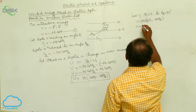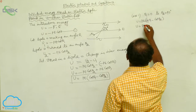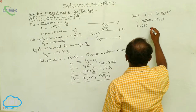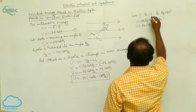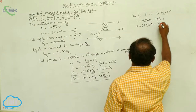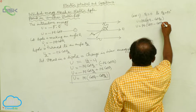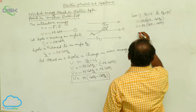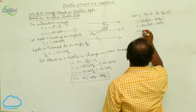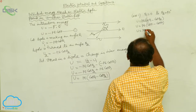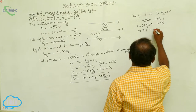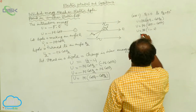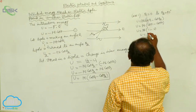Therefore, U = Pe(cosθ₁ − cosθ₂) = Pe(cos0° − cos90°) = Pe(1 − 0). Therefore U equals Pe.